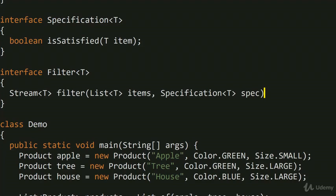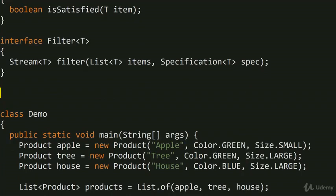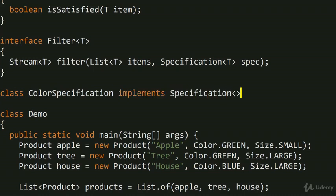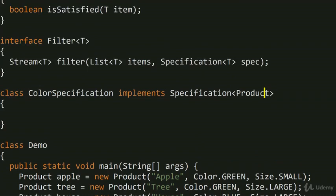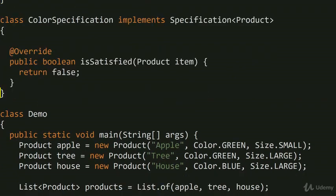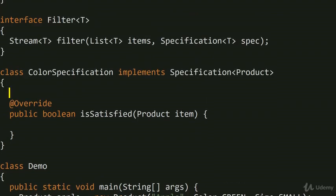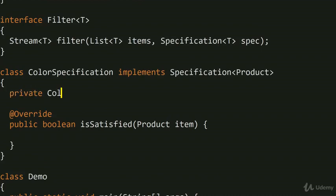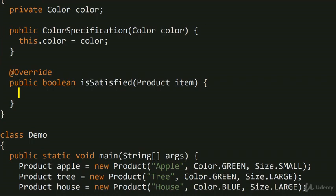Now suppose we want to build a ColorSpecification — a specification matching a particular color. We create class ColorSpecification implementing Specification<Product>. We implement isSatisfied, and we haven't specified the color yet, so we add a private Color color field and a constructor that initializes it. In isSatisfied, we return whether item.color equals the color we're looking for.